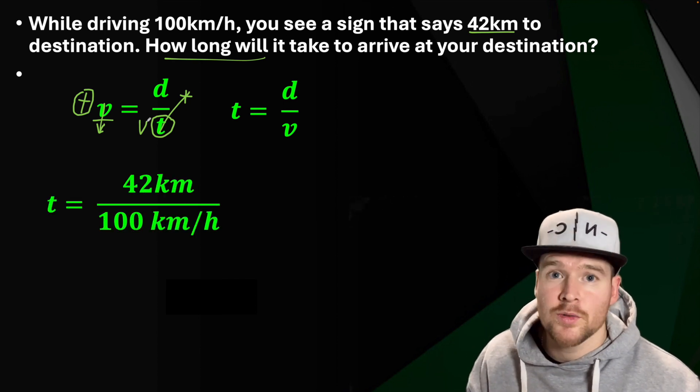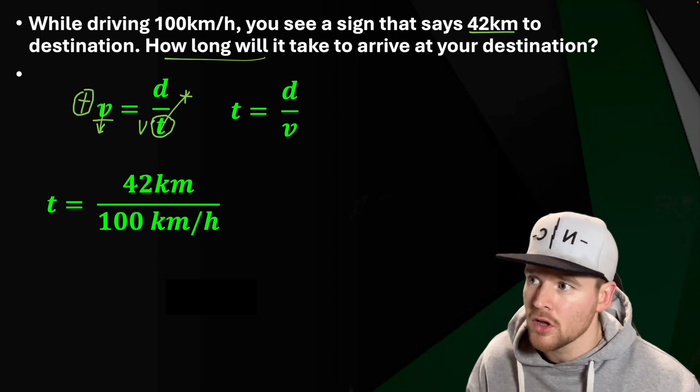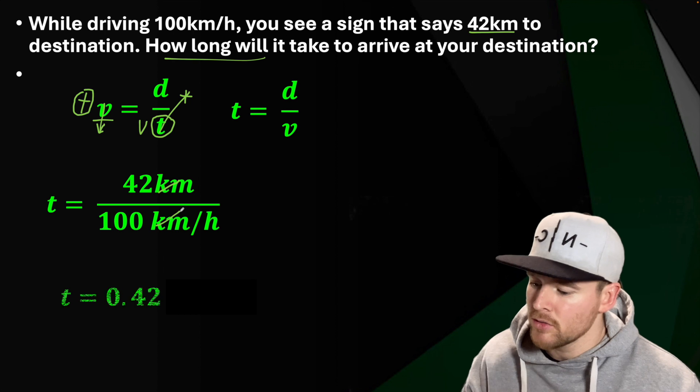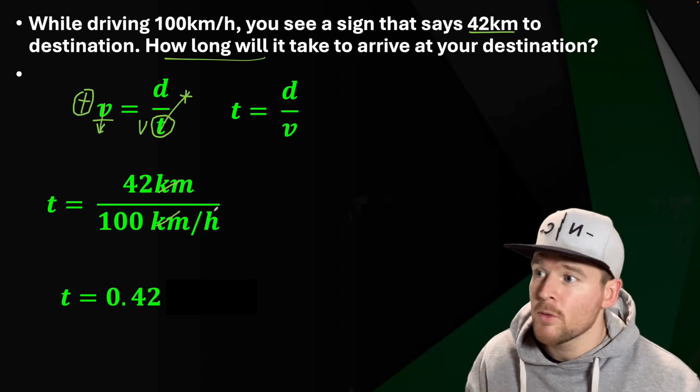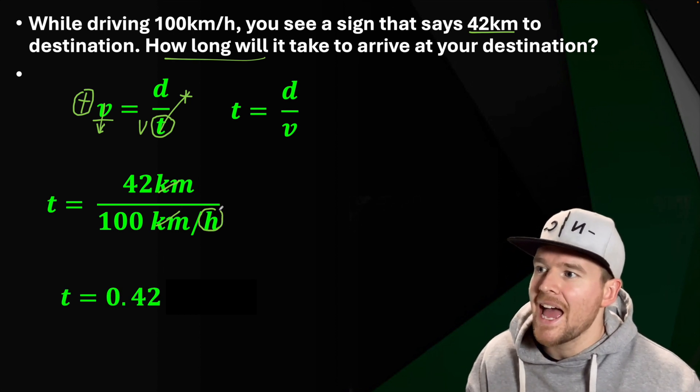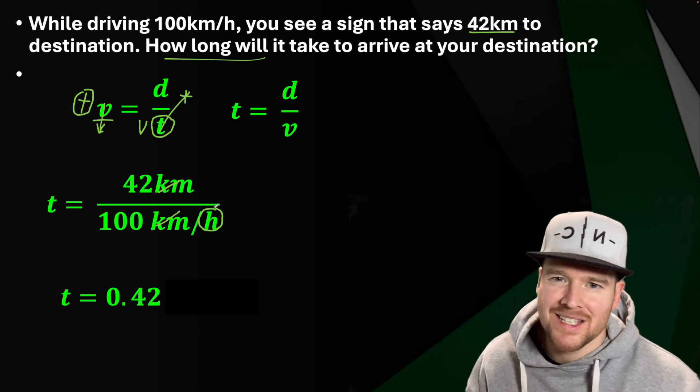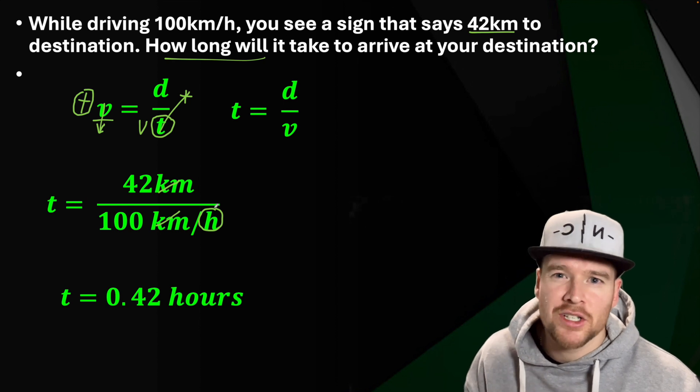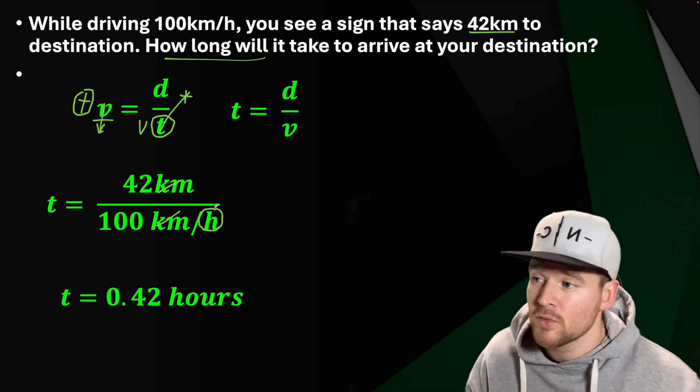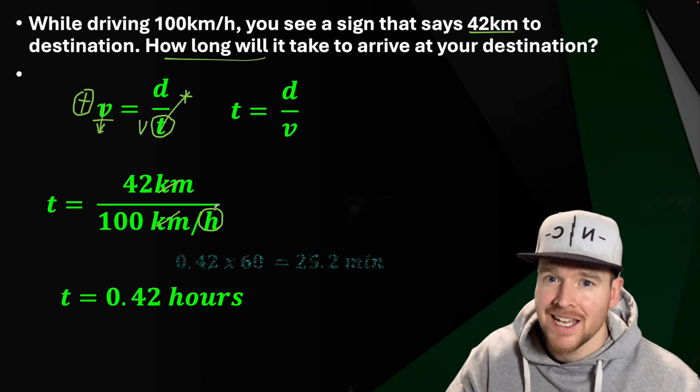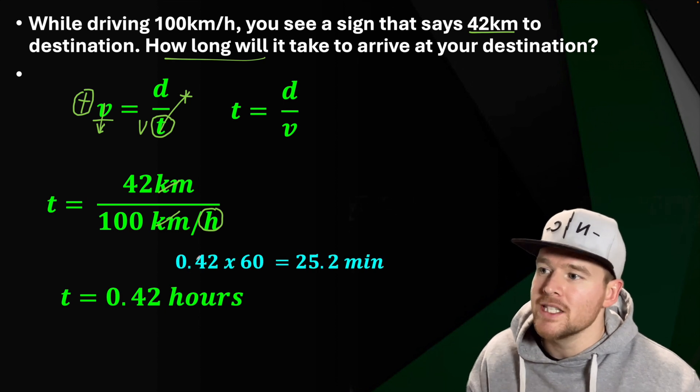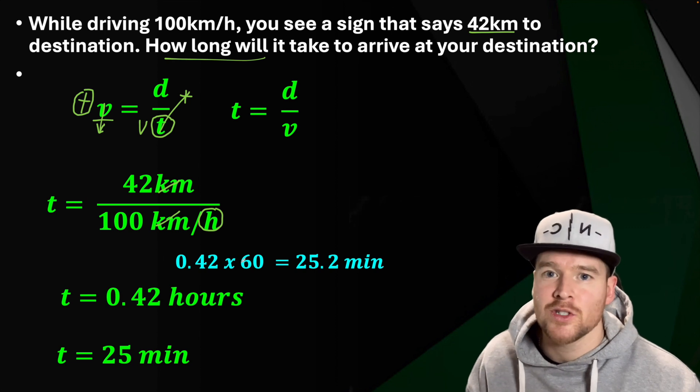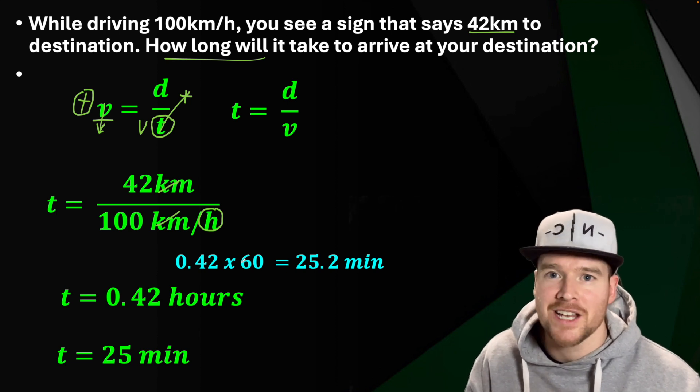So let's go 42 kilometers divided by 100 kilometers per hour. We get an answer of 0.42 hours. Not often that when it's less than an hour, we talk about decimals of an hour. So we should probably turn this into minutes. There's 60 minutes in an hour. So 0.42 of an hour times 60. This should give us an answer that rounds to 25 minutes until you reach your destination.